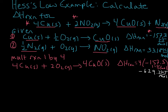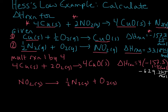Let's flip that reaction first. So nitrogen dioxide is going to go to one-half N₂ gas plus oxygen gas. Since we reversed the reaction, we also reverse the sign of delta H, giving us negative 33.18 kilojoules per mole.